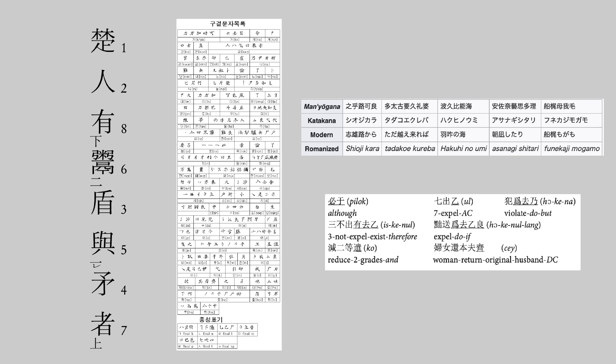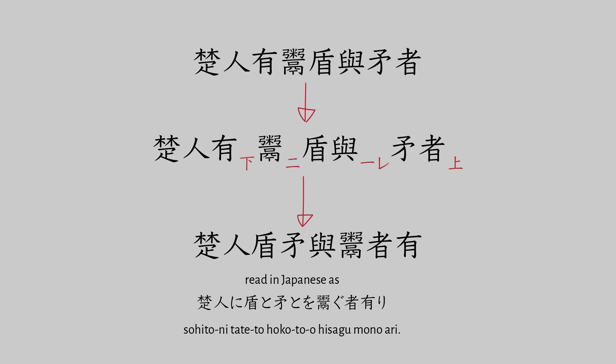Over time, both the Koreans and the Japanese did start attempting to adopt Chinese characters to better represent their own respective languages through a few different but similar methods. One of these methods — called Gugyeol in Korea and Kanbun in Japan — was to annotate the original text so one could mentally rearrange the sentence into the same word order as Korean or Japanese, allowing readers to read the text out in their own native language. Without the annotation markers, the sentence would still be normal classical Chinese, but by adding the annotations, Japanese and Korean readers would have an easier time parsing the meaning.